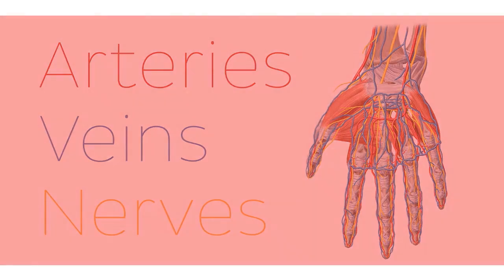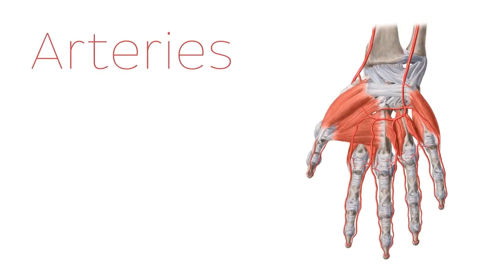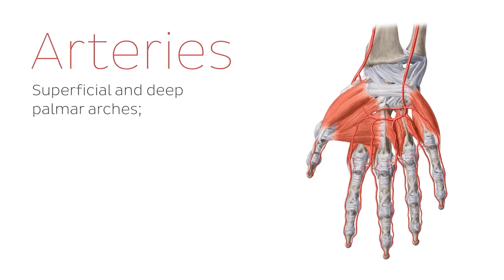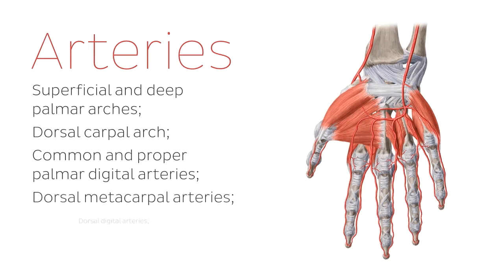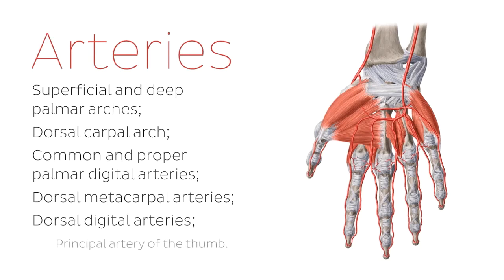Without further ado, let's start off with the first one on the list: the arteries. I'm going to list them before we go into more detail in this tutorial, but do not be scared — they're quite simple to understand. These arteries include the superficial and deep palmar arches, the dorsal carpal arch, the common and proper palmar digital arteries, the dorsal metacarpal arteries, the dorsal digital arteries, and finally the principal artery of the thumb.